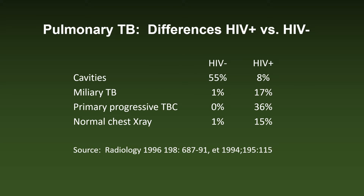Some statistics about patients with pulmonary TB regarding the differences between HIV-positive versus HIV-negatives: cavities are more frequent in HIV-negatives. But miliary TB, primary progressive TB, and normal chest X-ray — probably on the way to miliary TB with positive blood cultures — are clearly more frequent in HIV-positives.